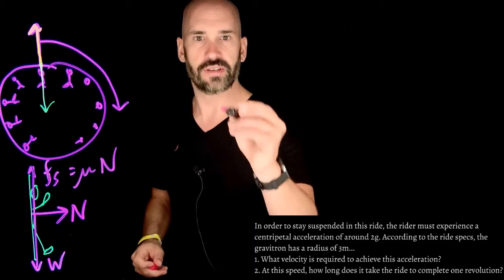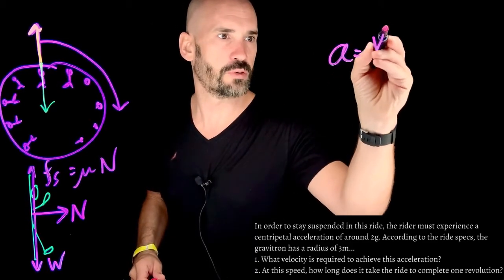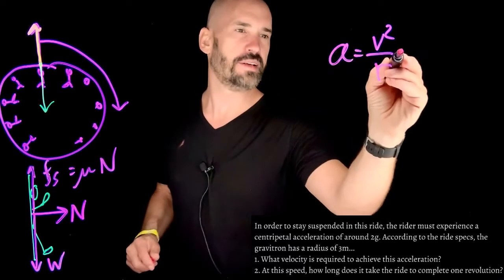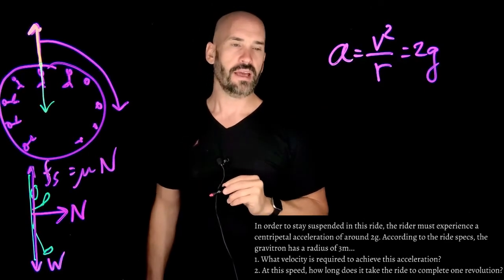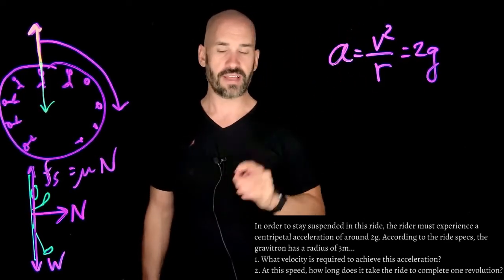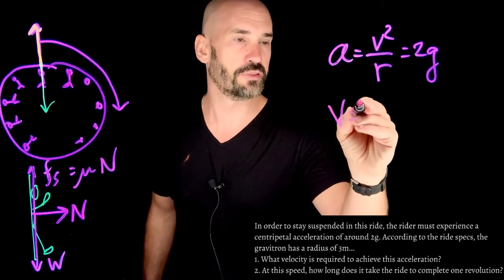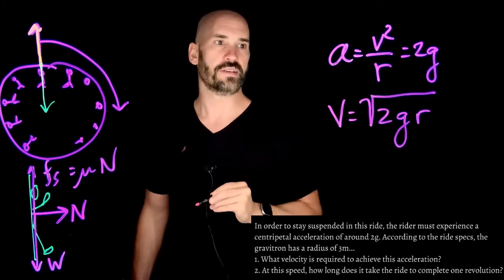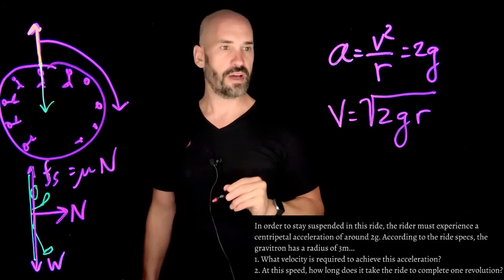But what this question is really asking is, what velocity is required to get the 2g acceleration that you need so that you have a strong enough normal force to create that friction that holds you up. So in other words, my question is, I want to do A equals V squared over R. But that A that I want is just going to be 2g. I want that A to be 2g. And we know that g is just 9.8. So that's easy. So what velocity is that going to be? Well, that's just going to be V equals the square root of 2gr in this case. And what's the radius of this gravitron? 3.